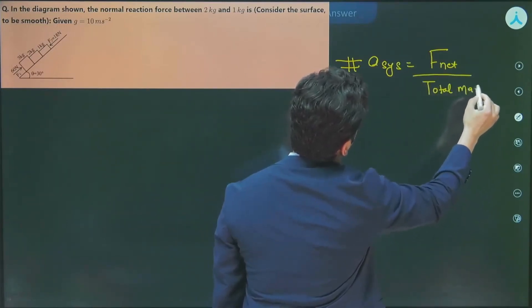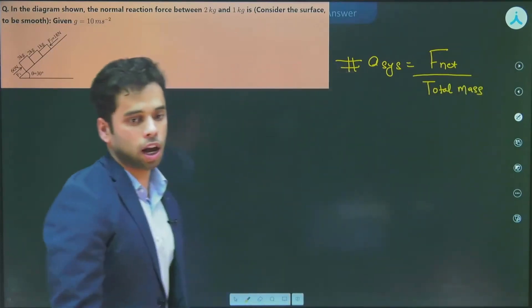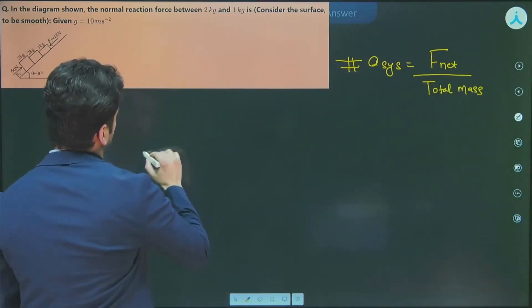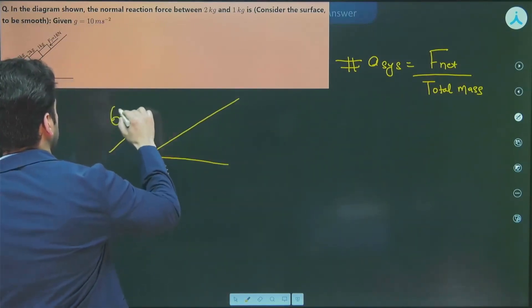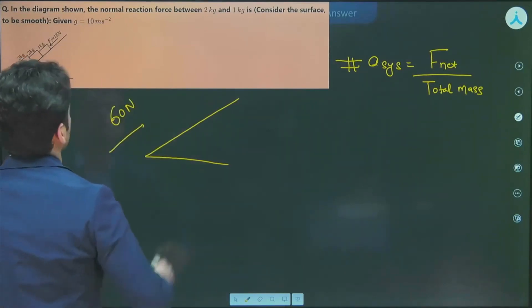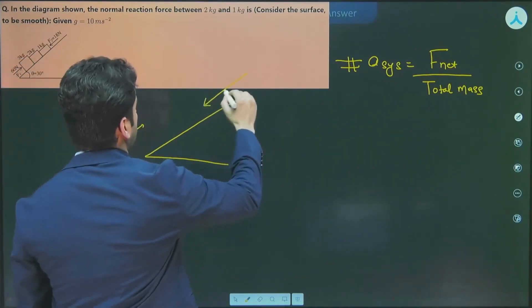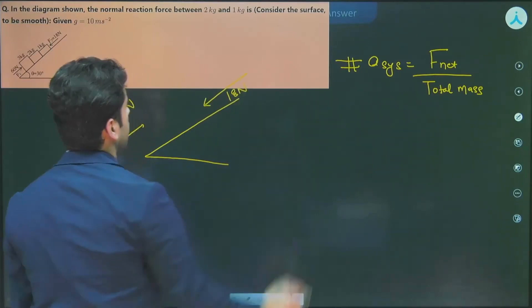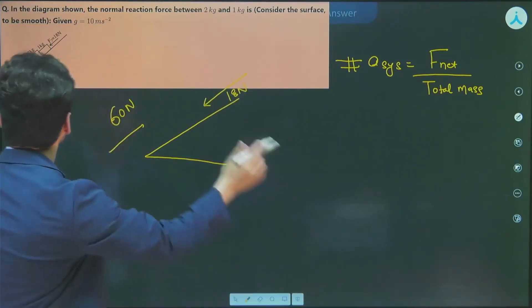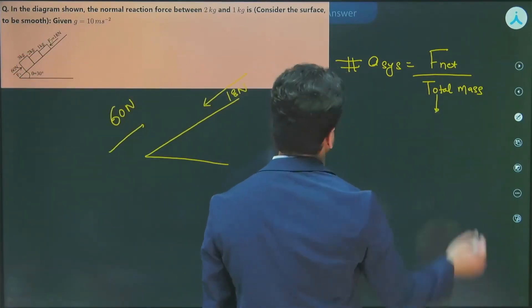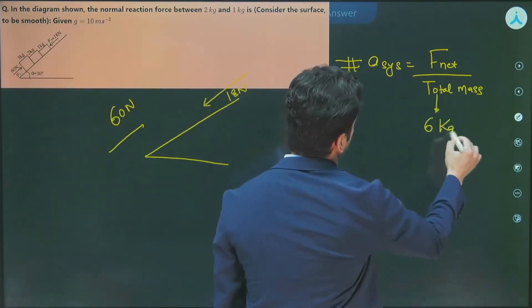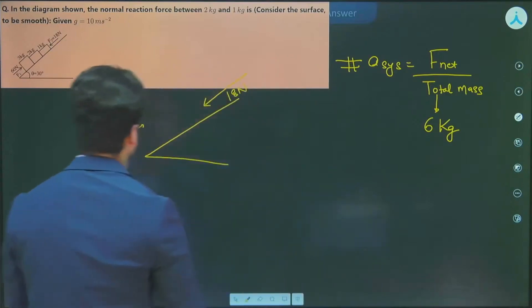Now this part is tricky. Let's calculate. You can see that 60 N is in this direction, and 18 N is in this direction. The total mass of the system is 3 plus 2 plus 1, so 6 kg is the total mass.